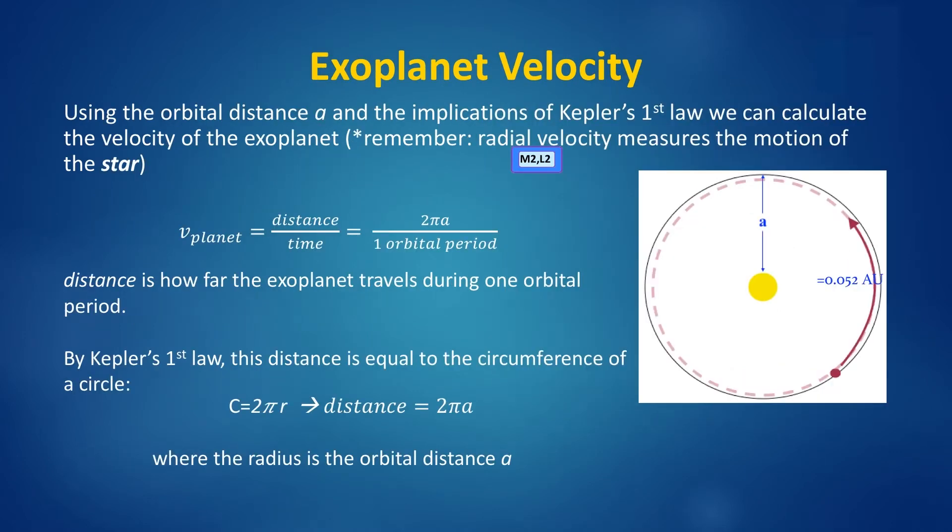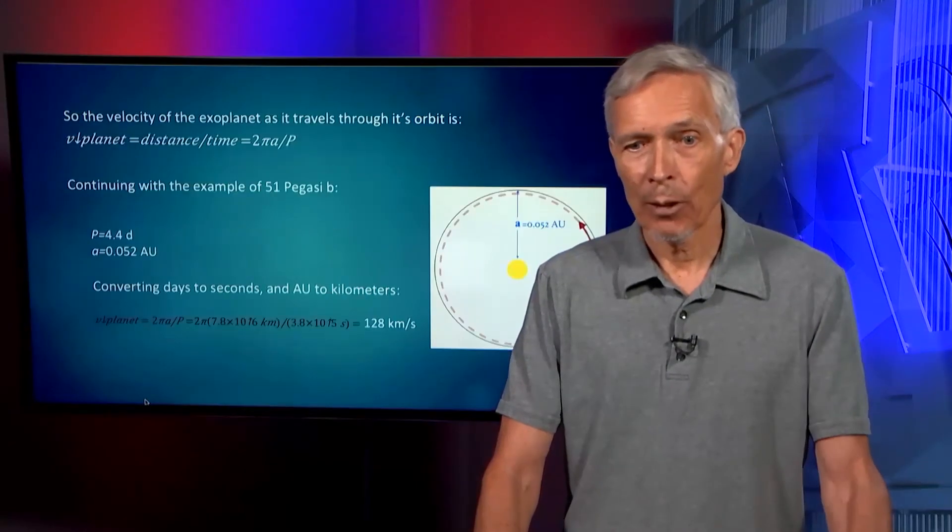Using the orbital distance and the implications of the first law, we can calculate the velocity of the exoplanet. Remember, it's a spectral measurement that we're making, but that spectral measurement of a velocity shift or a Doppler shift can be converted directly into a physical velocity or a radial velocity in space. And we can see how the star is orbiting, because we know the orbital period, we know the distance the star has to travel in the orbital period, and therefore we can see how fast and how far the star is moving, or the planet is moving in its orbit of the star.